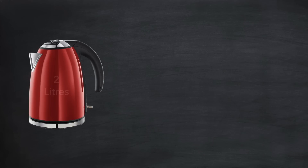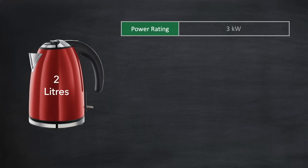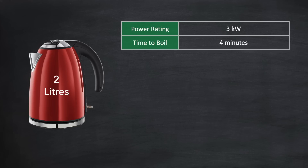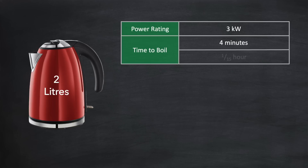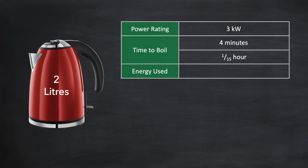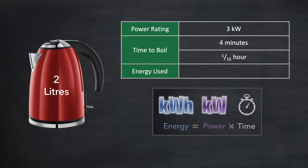With this in mind, let's see how power and energy work with electrical appliances. Let's take a kettle holding two litres of water and having a power rating of three kilowatts. If the water is cold and we switch on the kettle, we can expect it to take around four minutes to boil. In order to work out the amount of energy required to boil those two litres of water, we must convert the time into hours. There are 60 minutes in an hour, so 4 minutes is 1/15th of an hour. We multiply the power — 3 kilowatts — by the time taken in hours — 1/15th — to get 0.2 kilowatt hours.